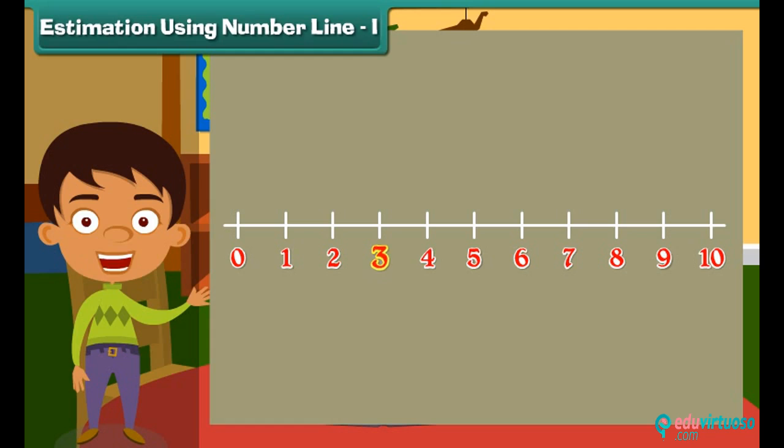The position of number 3 will be between 0 and 5 and number 7 will be between 5 and 10. Let us add 3 and 6. By adding 3 and 6 we get 9 and the position of 9 will be near to 10.